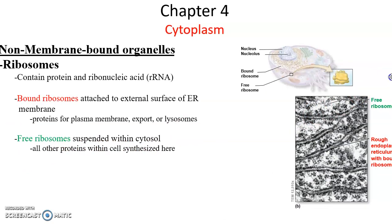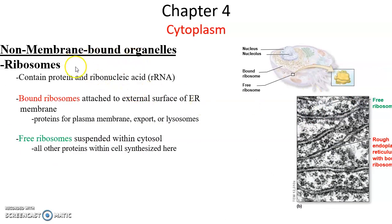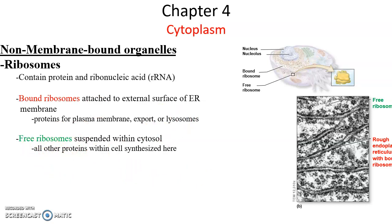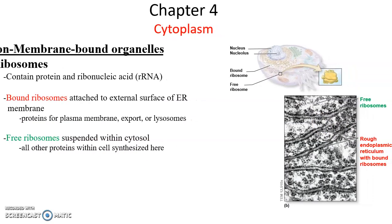Ribosomes do not have membranes — they are non-membrane-bound organelles. They are large complexes of proteins and RNA, specifically ribosomal RNA. Some ribosomes are bound to the surface of the endoplasmic reticulum, forming the rough endoplasmic reticulum. Other ribosomes are free, floating in the cytosol and synthesizing proteins the cell needs. So ribosomes are protein-RNA complexes found either free or bound to the rough endoplasmic reticulum.